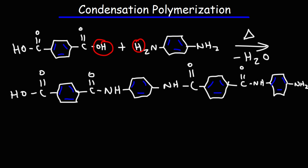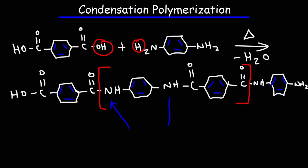Now let's identify the repeating unit in this polymer. Notice that we have two carbonyl groups in the first molecule and two nitrogen atoms in the second molecule. When we combine those two units we should have two nitrogen atoms, two carbonyl groups, and two benzene rings in the repeating unit as well. We put an 'n' here because this polymer can be very big — it can have a hundred units, a thousand units, or even ten thousand units.